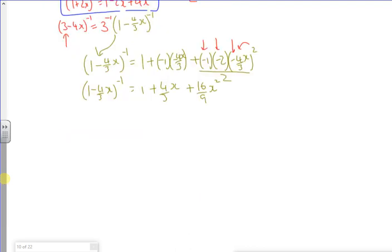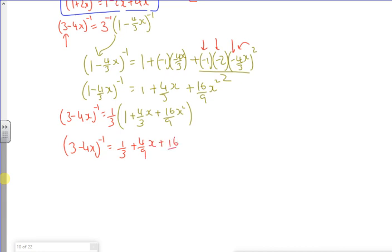So there's another one to be boxed. Well no, not quite finished actually at all. So now I want, colours the same. So 3 minus 4x to the minus 1 is a third of the expansion. So 1 plus 4 thirds of x, 16 over 9 x squared. So 3 minus 4x to the minus 1 is a third of 1 plus 4 over 9 x, 16 over 27 x squared. And boxed. So there are my two expansions done. I've done the partial fractions, I've done the expansions.